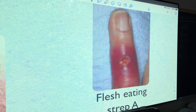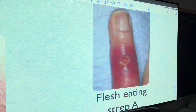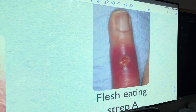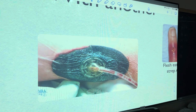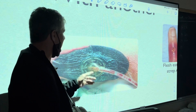He didn't die but he lost some of his butt cheek. If you don't get necrotizing fasciitis treated it will kill you. Now remember the Black Death — bubonic plague. People would smell their own rotting flesh. They called it the Black Death because patches of skin would die where the bacteria poisoned the tissue so thoroughly.